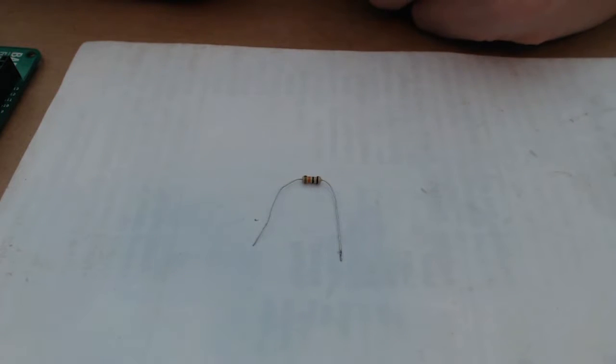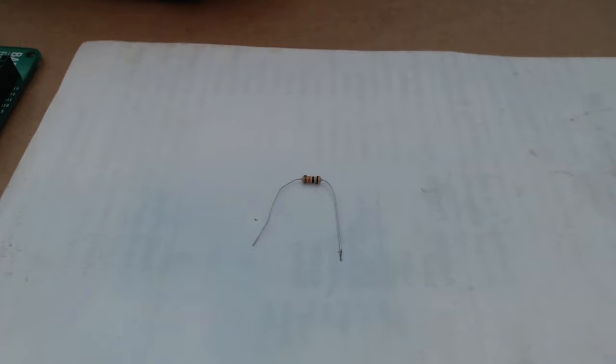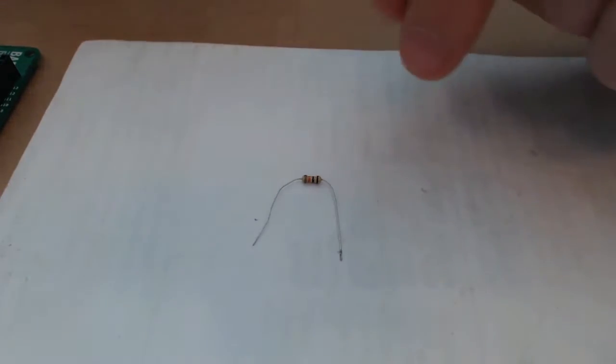You will be using for your LEDs a 4.7 thousand ohm resistor. So for you and your kits, it's going to be the resistor that has a red band on it.